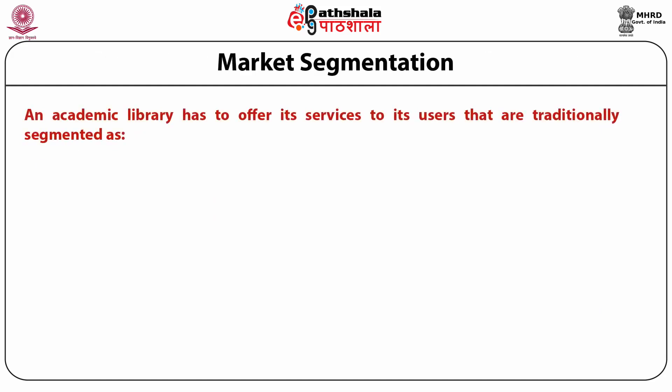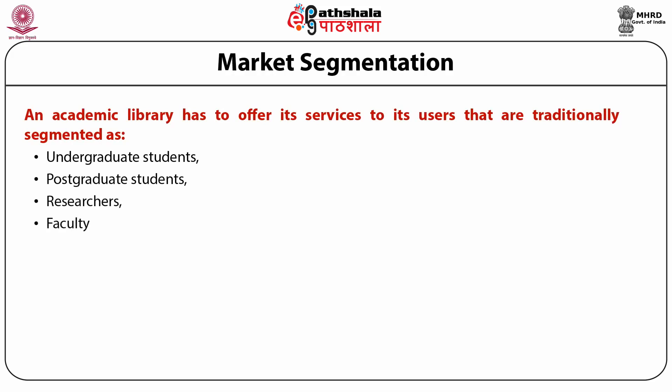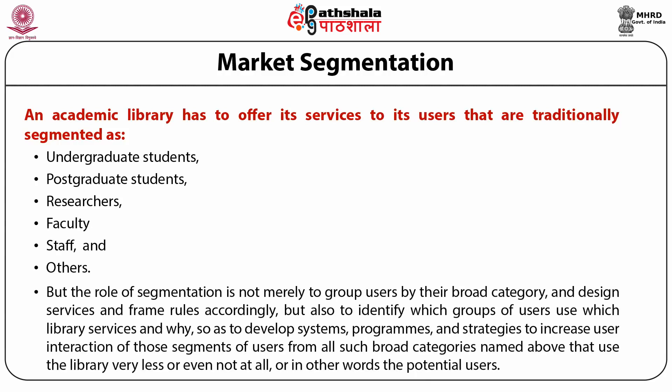An academic library has to offer its services to its users that are traditionally segmented as undergraduate students, postgraduate students, researchers, faculty, staff and others. But the role of segmentation is not merely to group users by their broad category and design services and frame rules accordingly, but also to identify which groups of users use which library services and why, so as to develop systems, programs and strategies to increase user interaction of those segments of users from all such broad categories that use the library very less or even not at all — in other words, the potential users.